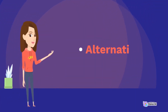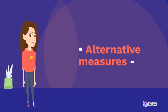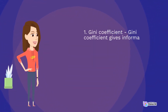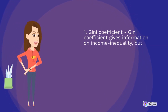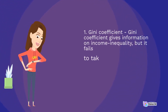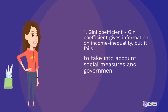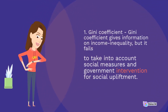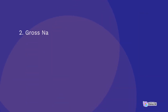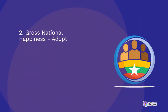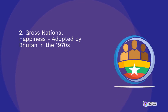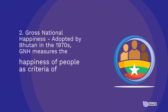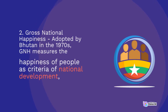Alternative Measures: 1. Gini Coefficient – The Gini Coefficient gives information on income inequality, but it fails to take into account social measures and government intervention for social upliftment. 2. Gross National Happiness – Adopted by Bhutan in the 1970s, GNH measures the happiness of people as a criterion of national development.